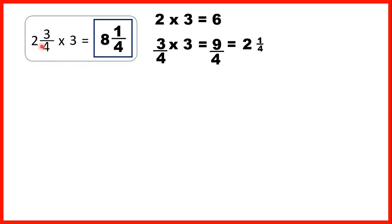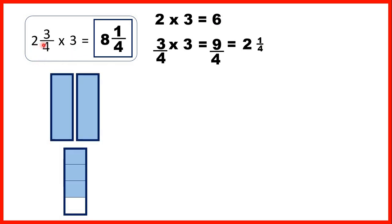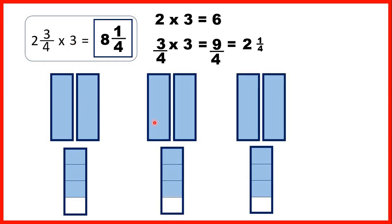To show 2 and 3 quarters, we can show 2 whole bars and then 3 quarters of another one. We're multiplying by 3, so we show 2 and 3 quarters three times. Look at the whole numbers — we've got 6 whole fraction bars, so that's our 6. Then each of these sections is a quarter, and altogether we've got 3, 6, 9 quarters. We can regroup that 9 quarters into 2 wholes and 1 quarter. That's why dividing the numerator by the denominator changes it back into a mixed number.